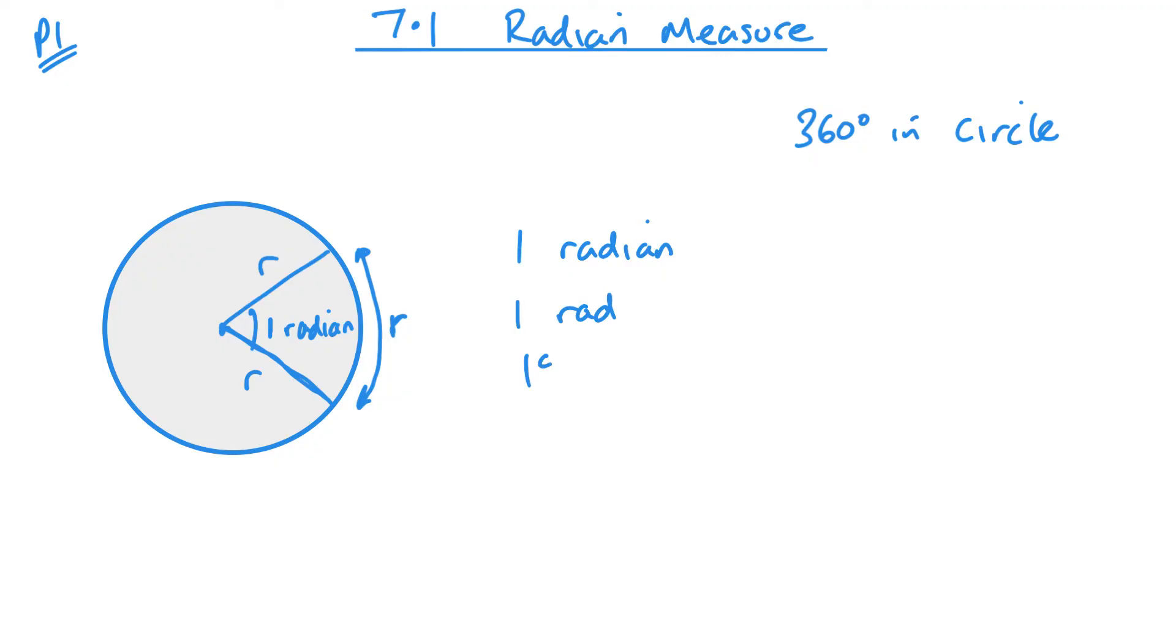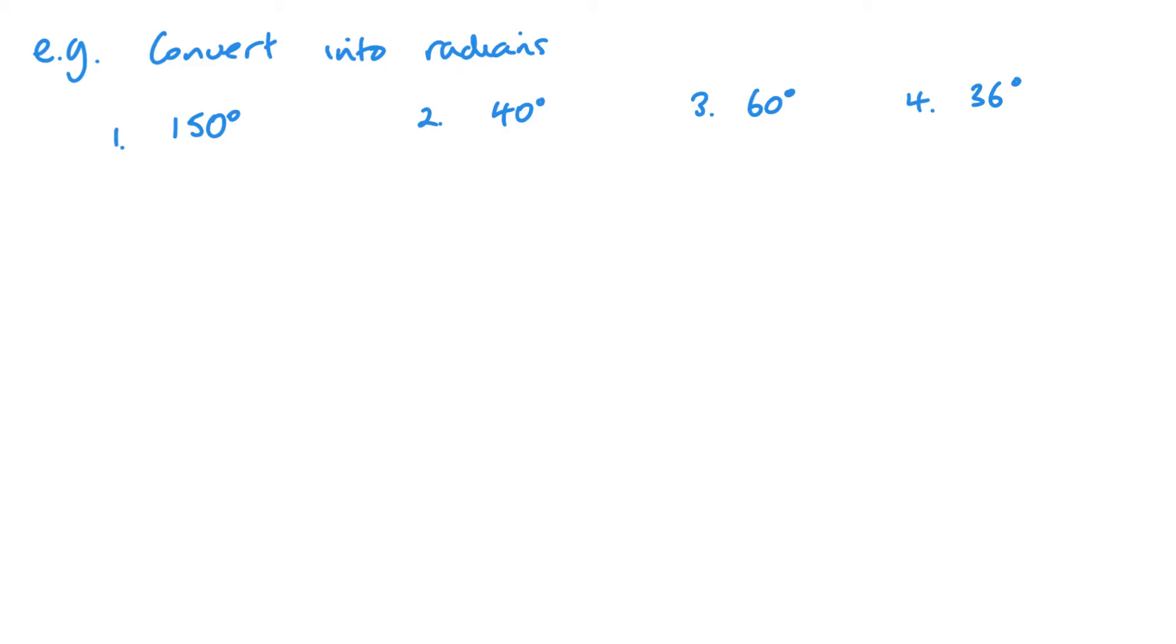And this leads us on to the fact, then, that there will be two pi radians in a full circle. Which will mean that pi radians would be equal to 180 degrees. Or one radian will be 180 divided by pi. So let's first have a look at converting degrees into radians.